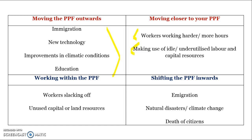As a classroom analogy: if we were producing goods and services, and someone else entered the classroom, that would shift the PPF. But if those already working were not at their productive capacity and started working harder, that would make us move closer to our PPF. So workers working longer hours does not shift the PPF, even though it sounds like it does — the fact that they could work longer hours means initially we weren't at our maximum capacity.